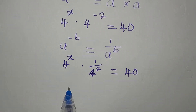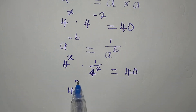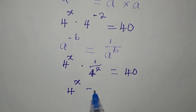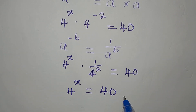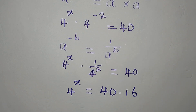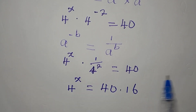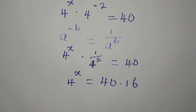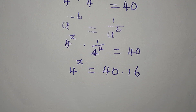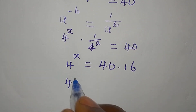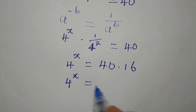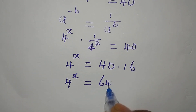So now we're having 4 to the power of x equal to 40 multiplied by 16, because 4 squared is 16, so we can just cross multiply. So let's multiply 40 by 16. So 4 to the power of x now is equal to 640.